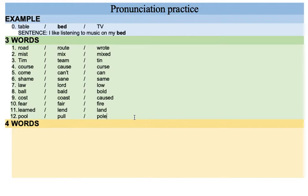One: wrote. Two: missed. Three: team. Four: curse. Five: can. Six: same. Seven: law. Eight: ball. Nine: coast. Ten: fire. Eleven: land. Twelve: pool.